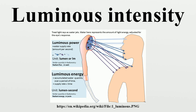If the source emitted uniformly in all directions, the total radiant flux would be about 18.40 milliwatts, since there are four pi steradians in a sphere. A typical candle produces very roughly one candela of luminous intensity.